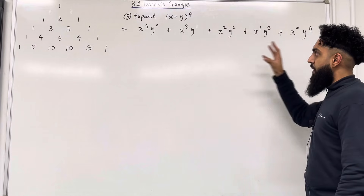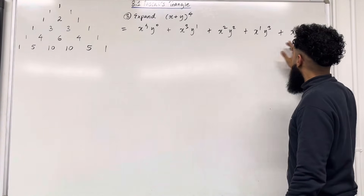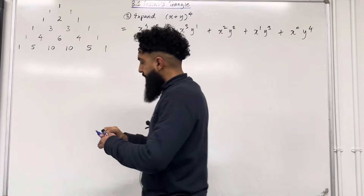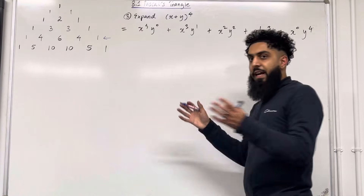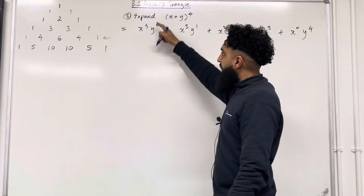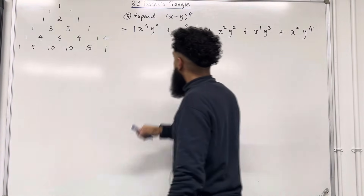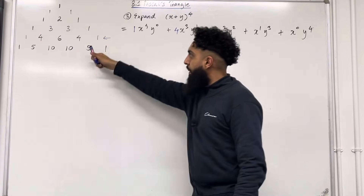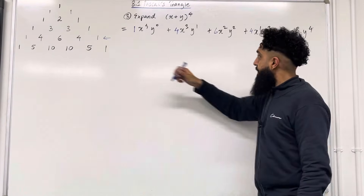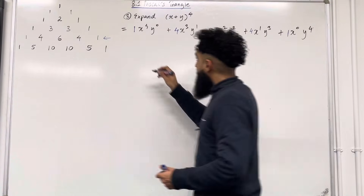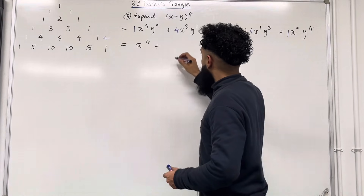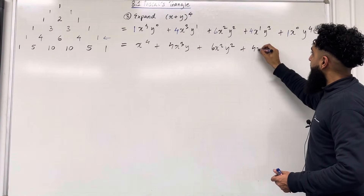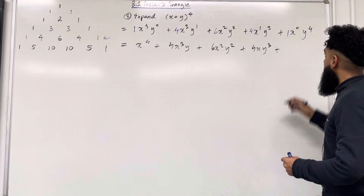Now we need to identify the coefficients. Over here we have 5 different terms, so we go back to Pascal's Triangle and the row with 5 terms is this row here: 1, 2, 3, 4, 5 terms. The coefficient of the 1st term is 1, the 2nd term is 4, the 3rd term is 6, the 4th term is 4, and the 5th term is 1. So simplifying: the 1st term is x⁴, plus 4x³y, plus 6x²y², plus 4xy³, and the 5th term is y⁴.